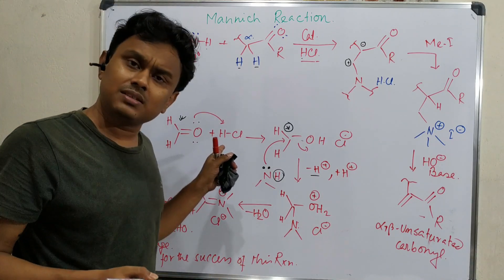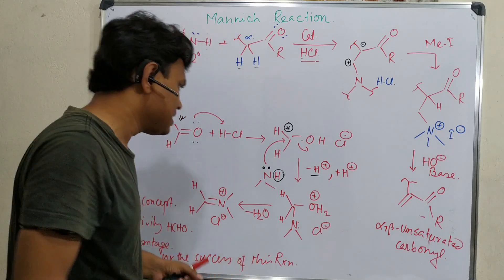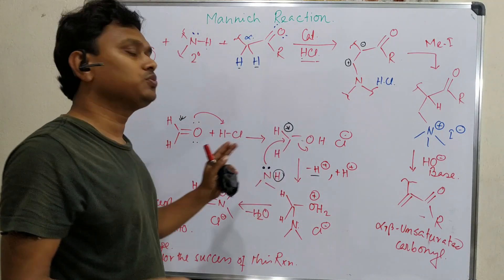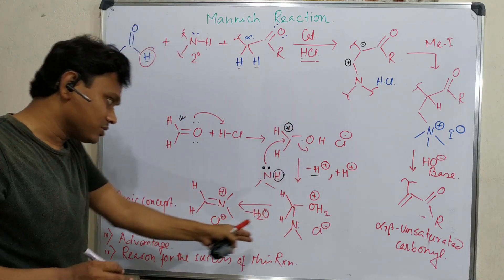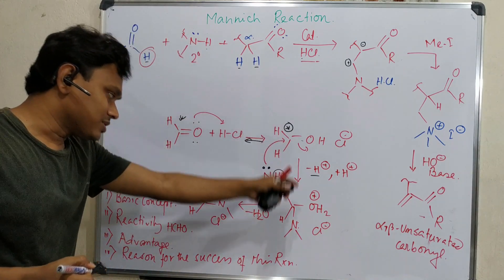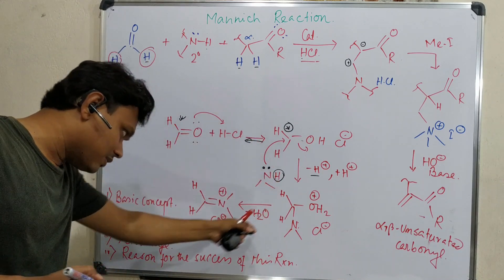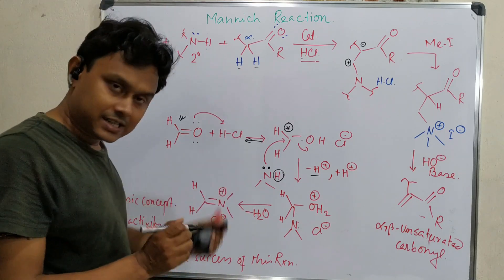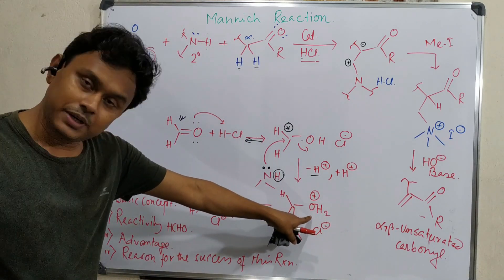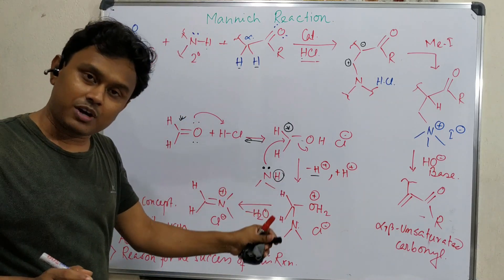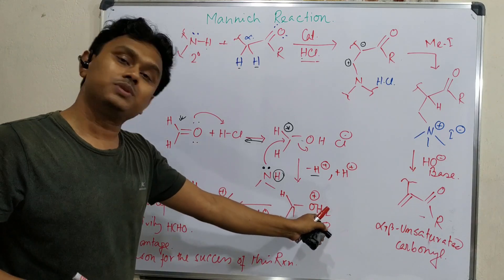After the attack it will be just OH here. This OH will be protonated again to form OH2+. You may think that in reaction medium there is formaldehyde, HCl and amine. We know that amine is a stronger base. Then why the reaction will happen on this oxygen? It should happen on the nitrogen. Actually this protonation, deprotonation everything is a reversible process. Maybe in reaction medium everything is present with some difference in amount, but in this way reaction proceeds.